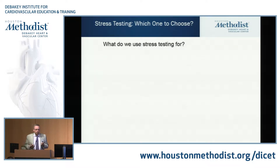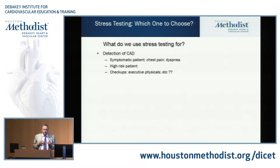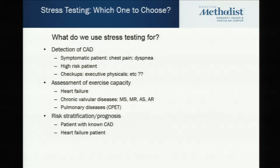So what do we use them for? Well, detection of CAD — patients with chest pain or dyspnea, particularly diabetics with dyspnea that can be angina equivalents, because many diabetics don't have chest pain; they have dyspnea when they are having ischemia. High-risk patients, check-ups — notice I put some question marks there because we'll address them in a minute. We also use them to assess exercise capacity, patients in heart failure, chronic valvular diseases, pulmonary diseases. And for risk stratification — patients with known disease and patients with heart failure likewise.